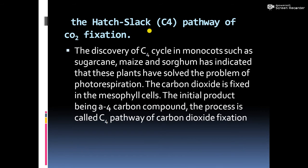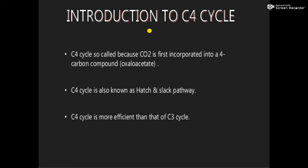Now, the Hatch and Slack pathway of carbon dioxide fixation — the C4 cycle. Its discovery in monocots such as sugarcane, maize, and sorghum showed that these plants have solved the problem of photorespiration. Carbon dioxide is fixed in the mesophyll cells, with the initial product being a four-carbon compound. The C4 pathway is so called because carbon dioxide is first incorporated into a four-carbon compound — oxaloacetic acid. The C4 cycle, also known as the Hatch and Slack cycle, is more efficient than the C3 cycle.